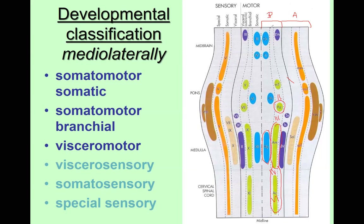Then we have the visceromotor area. For the facial nerve there is a nucleus and for the glossopharyngeal there is another — we call them the superior and inferior salivatory nuclei. Salivation is one of the main functions of these nuclei. Then we have the visceromotor nucleus for the vagus nerve, which is important mainly for glands and smooth muscles of organs innervated by vagus — the GI tract, respiratory tract, and heart.